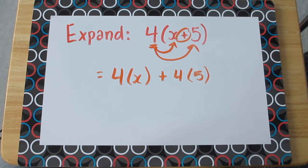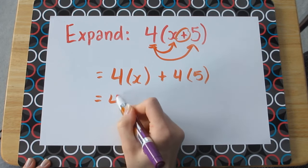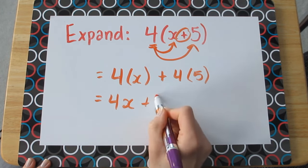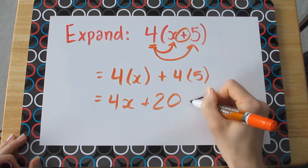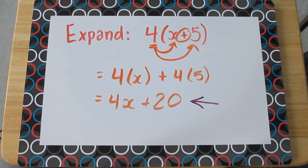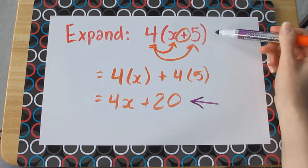If we carry out this multiplication, we'll be left with 4x plus 20. In a factoring question, we're going to be starting with this answer and we're going to be trying to work backwards to get to the original question.